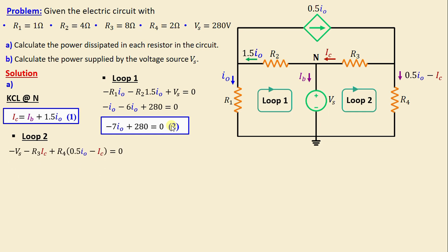In Loop 2 we can write: −VS − R2·IC + R4·(0.5·IO − IC) = 0.